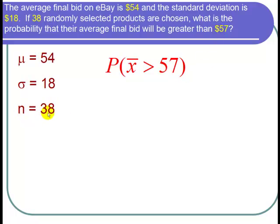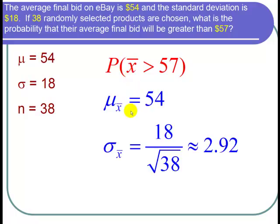Since n is equal to 38, which is greater than 30, I can use the central limit theorem and say that the X bar distribution is approximately normal, with mean mu sub X bar equal to mu, which is 54.